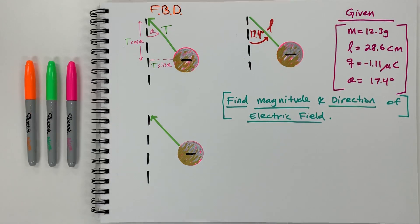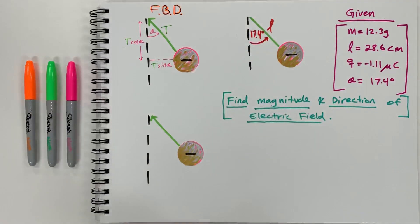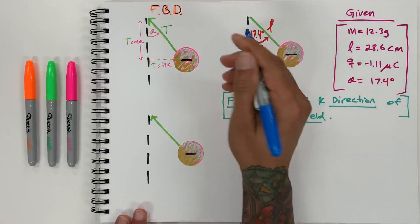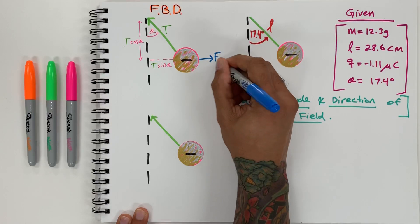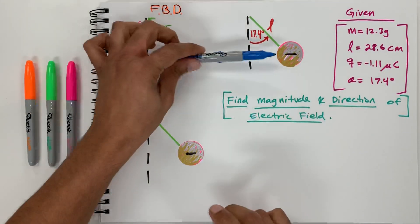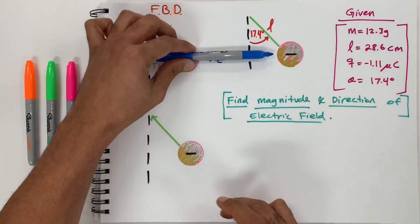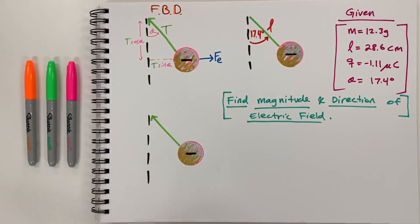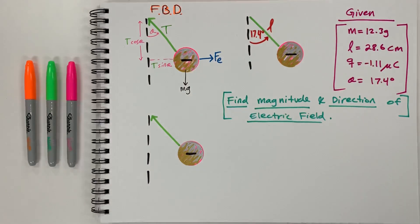The adjacent-over-hypotenuse side gives us T cosine theta, and that represents the full side. Now let's look at what's pushing this way — there's a force being felt in this direction. So the electric force is going to be in this direction, because that's the direction it's moving in, and then naturally everything always has mass times gravity going downward.